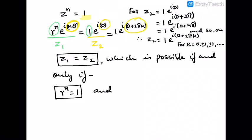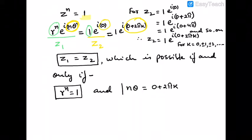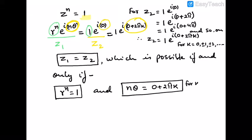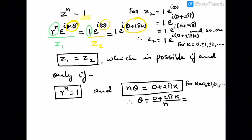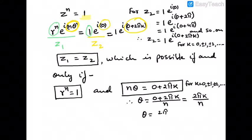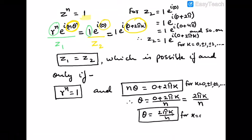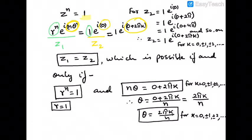Therefore n·θ = 0 + 2πk for k = 0, ±1, ±2, and so on. We can find theta: θ = 2πk/n. And since r^n = 1, we get r = 1 as one of the solutions.